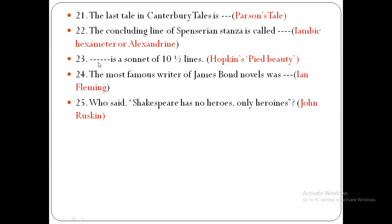Twenty-third: a sonnet of ten and a half lines — this is Hopkins' Pied Beauty. The most famous writer of James's spawned novels was — who said 'Shakespeare has no heroes, only heroines'? John Ruskin.